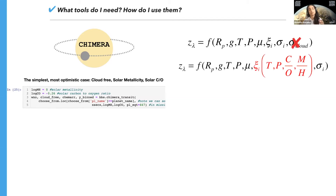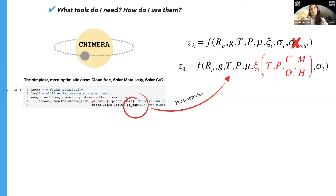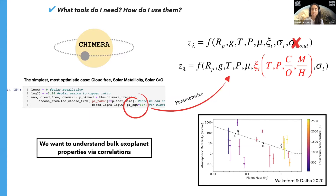The only thing we have left to deal with is defining what the temperature-pressure profile is, which we can parameterize using the planet's equilibrium temperature. These assumptions aren't just to make our lives easier — they're also grounded in the kinds of planetary science questions we ultimately want to answer with Webb. For example, we'd like to understand bulk exoplanet properties via correlations with things like mass. This updated mass-metallicity plot from Wakeford and Dalba 2020 shows the measured metallicities of exoplanets as well as solar system objects, with a nice correlation that the solar system planets exhibit.